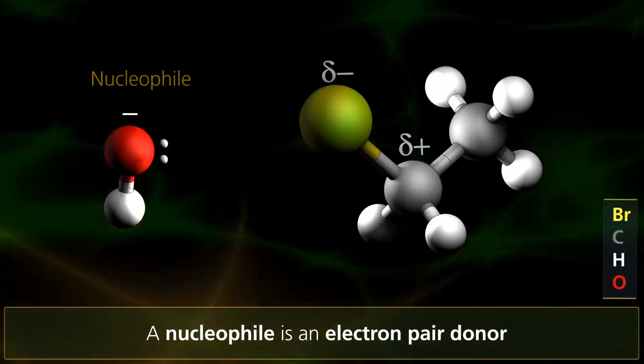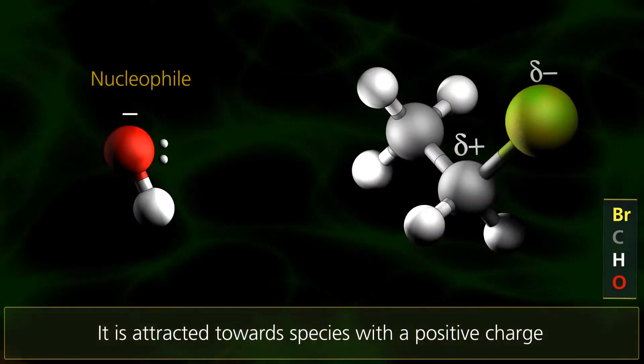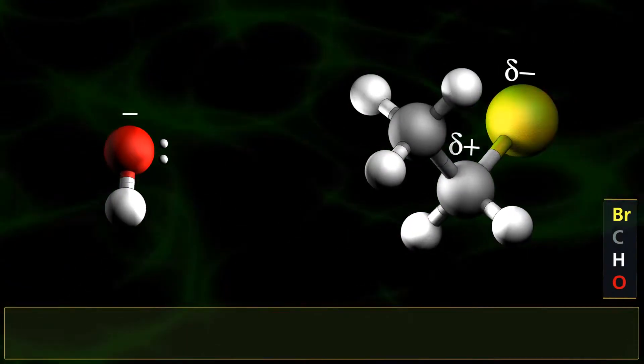A nucleophile is an electron-pair donor. It is attracted towards species carrying a full or partial positive charge, with which it can form a dative covalent bond.